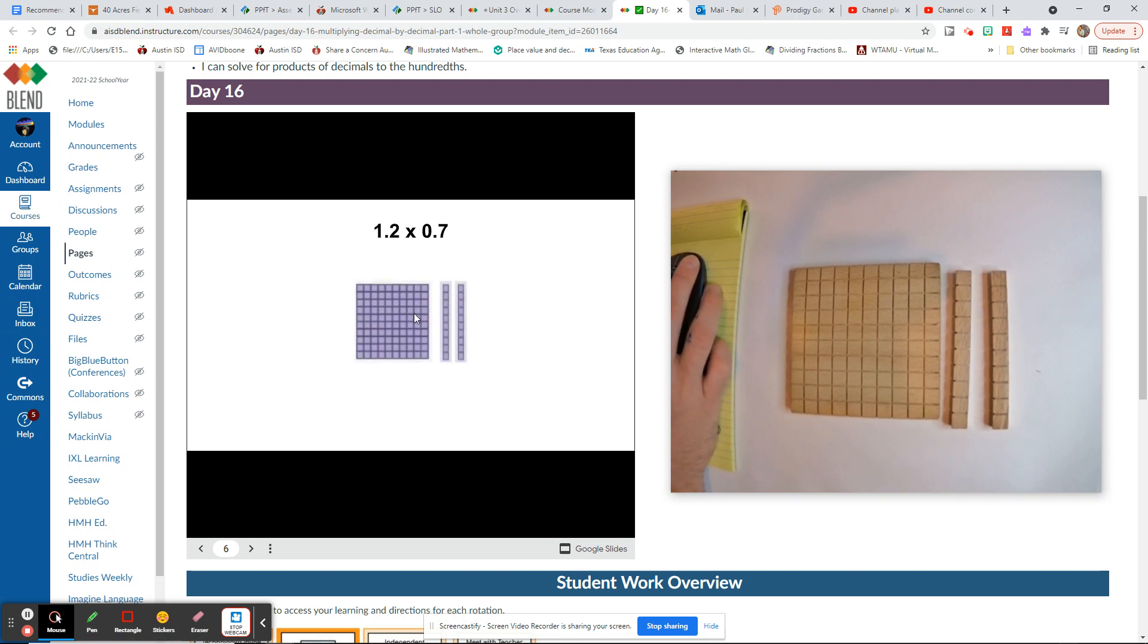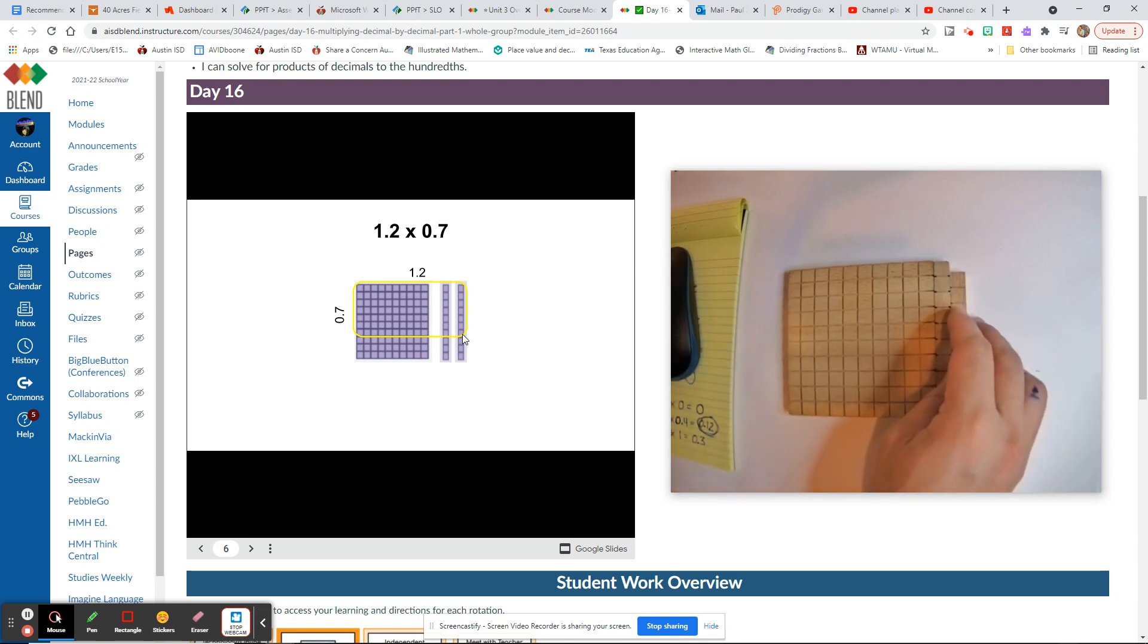As you can see, there's 1.2. Now they're just going to go and shade seven of those across - seven tenths. So there's 1.2 and there's 0.7 right there. If we counted all of these, because there's one tenth, two tenths, three tenths, four tenths, five tenths, six tenths, seven tenths horizontally, that's the same as us basically looking at